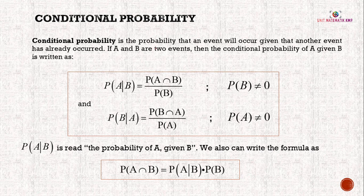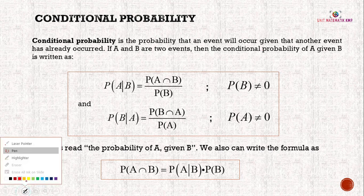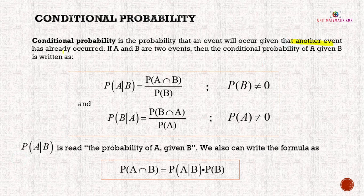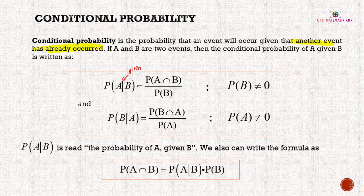Conditional probability is the probability that an event will occur given that another event has already occurred. If A and B are two events, then the conditional probability of A given B is written as P(A|B) = P(A∩B) / P(B), where P(B) cannot equal 0. And probability of B given A equals P(B∩A) / P(A), where P(A) cannot equal 0.